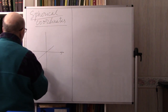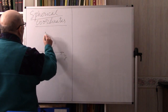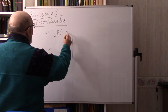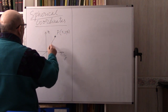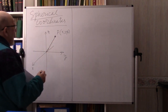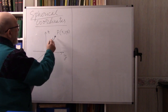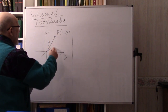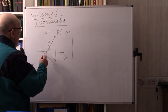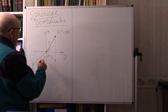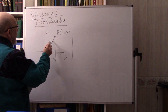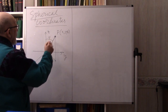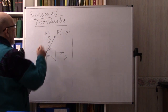In spherical coordinates, if you have a point P with coordinates x, y, z, we can also describe its position with the following parameters. Rho is the distance from P to the origin. If you drop a perpendicular, we have the angle theta, and we have another angle phi — the angle between the position vector rho and the z-axis.